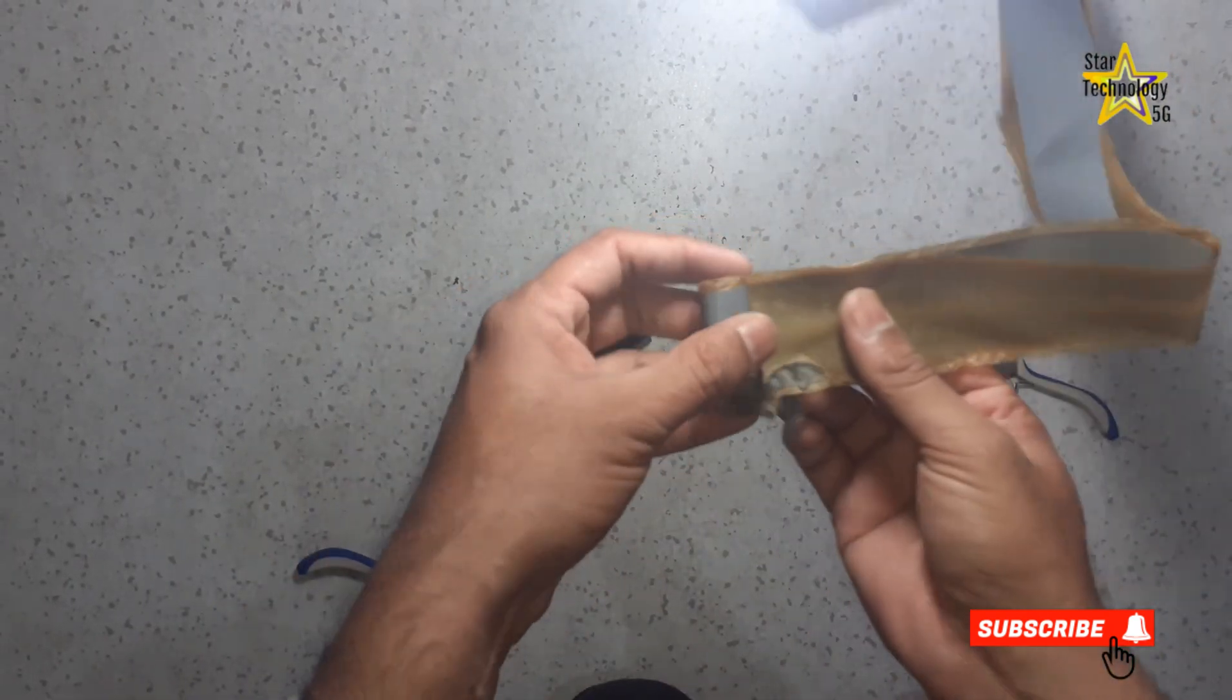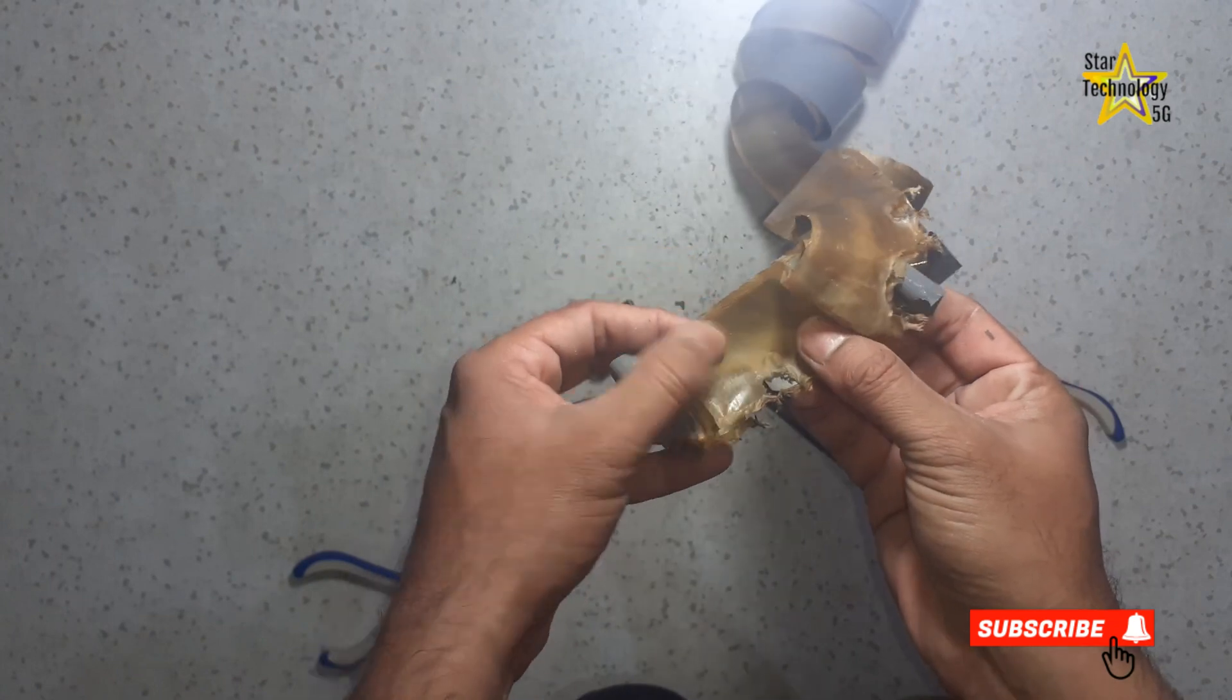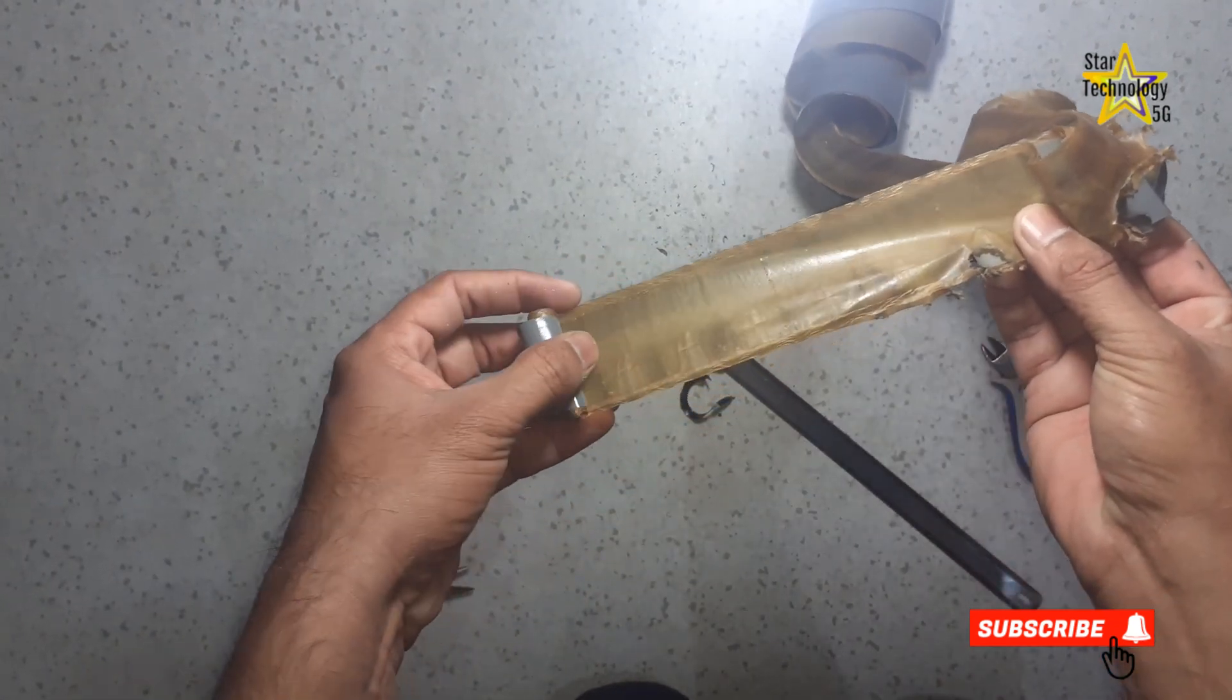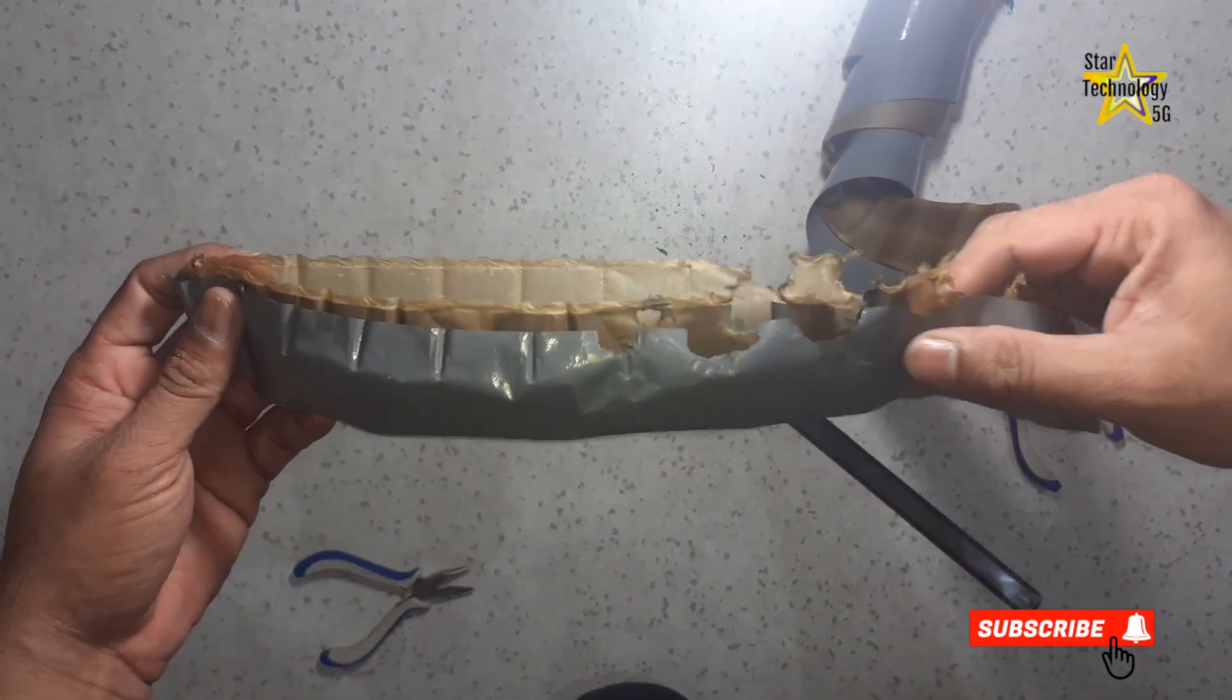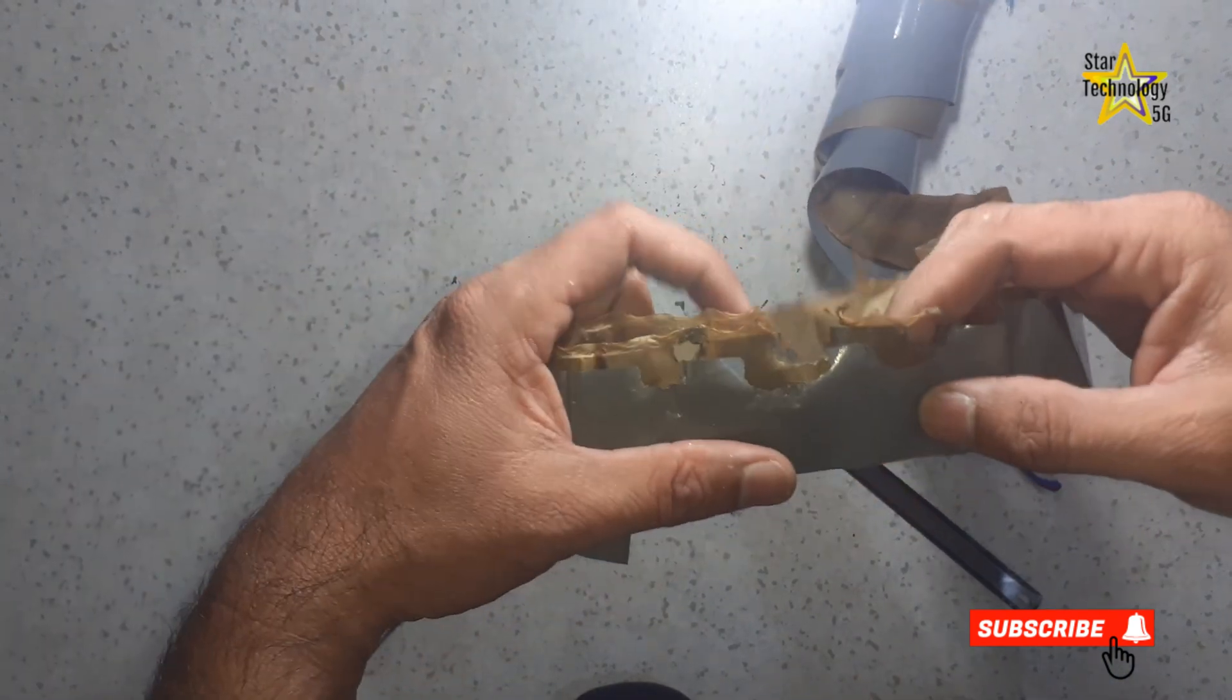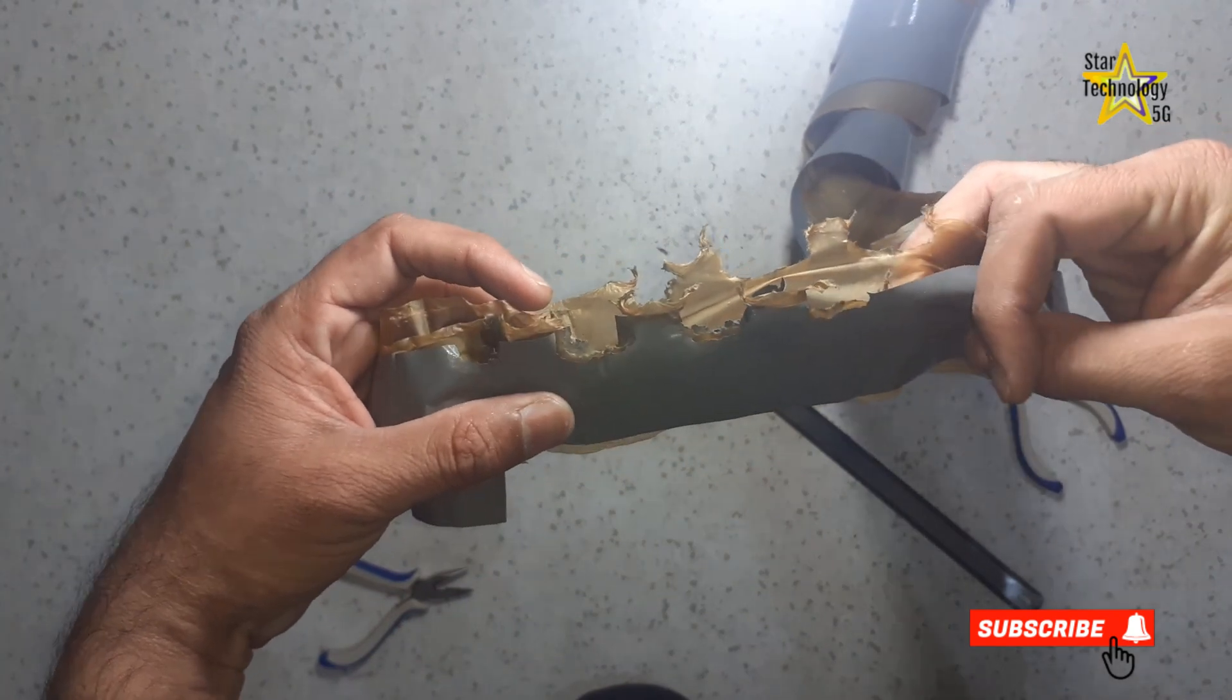Here is the damaged part of the capacitor. The outer body of the capacitor was good, but the inner side of the aluminum foil is damaged. Both foils are damaged. That is the reason the capacitor is not giving the proper value.